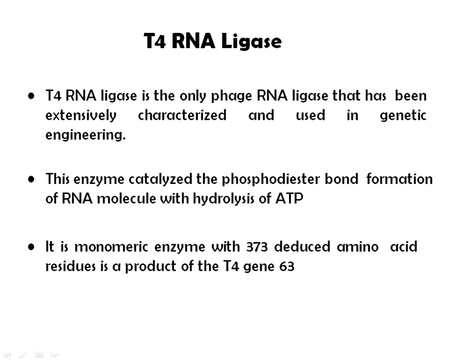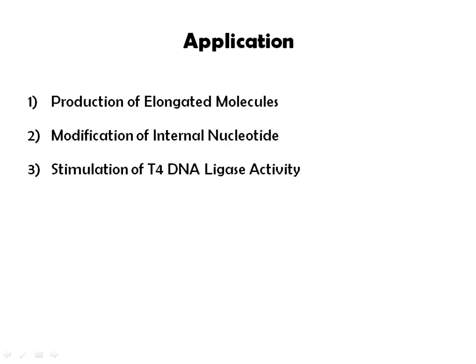T4 RNA ligase is the only phage-based RNA ligase that has been extensively characterized and used in genetic engineering. These enzymes catalyze phosphodiester bond formation in RNA molecules with hydrolysis of ATP. It is a monomeric enzyme with 373 amino acid residues and is a product of T4 gene 63. Applications include production of elongated molecules, modification of internal nucleotides, and stimulation of T4 DNA ligase activity.